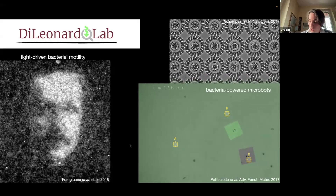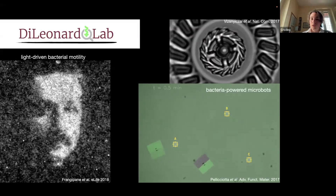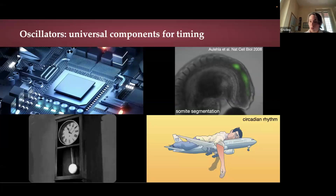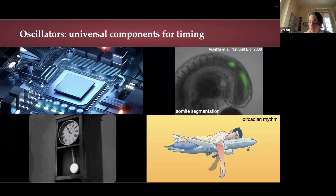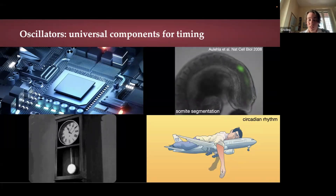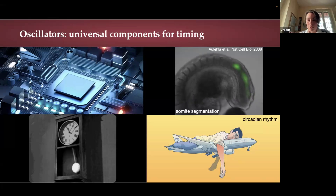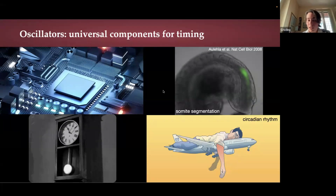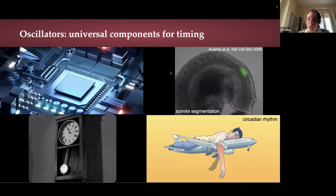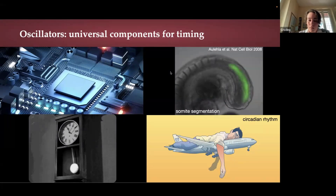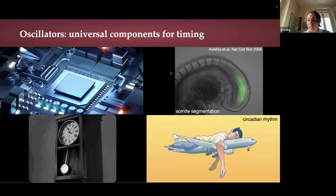But for the work I'm going to talk to you about today, our starting question was actually about oscillators. You all know that oscillators are very important components in physics and electronics, and they are fundamental tools to keep track of the passing of time. But oscillators can also have a similar role in biological systems. For example, in development you can see here the example of somite segmentation. Biological oscillators are also involved in phenomena we face every day, like the sleep-wake cycle called circadian rhythm.